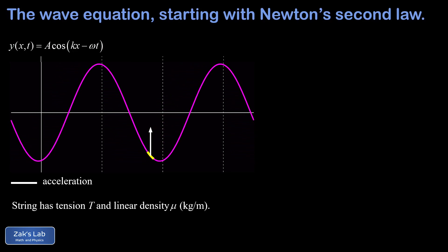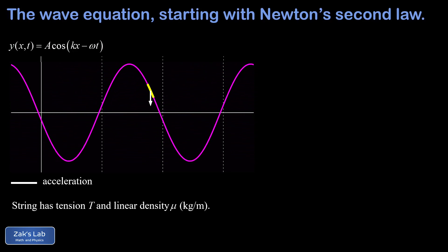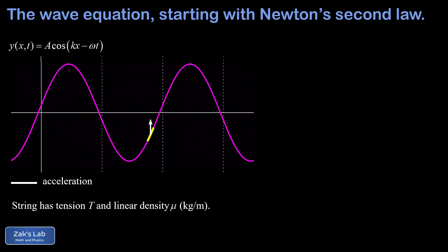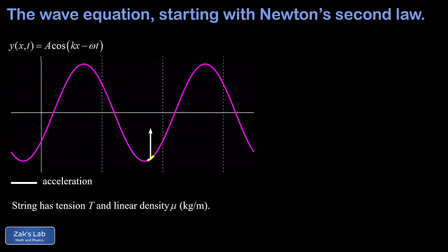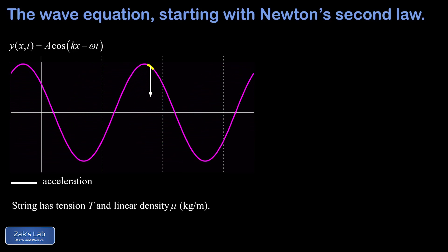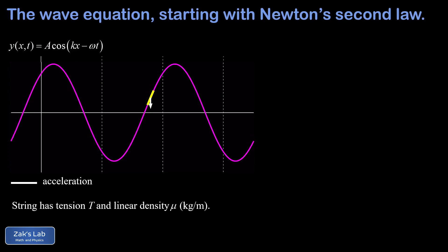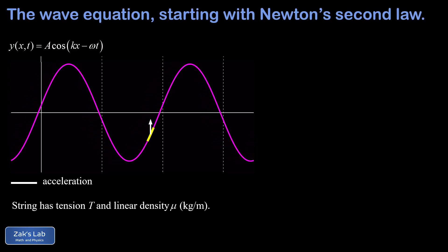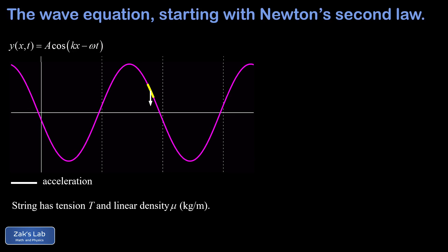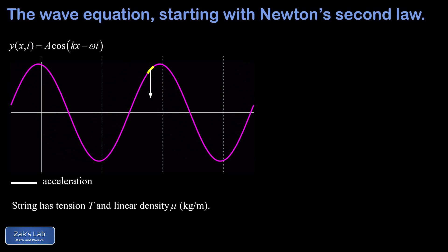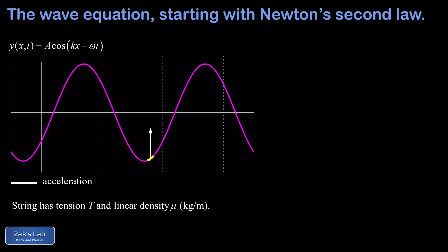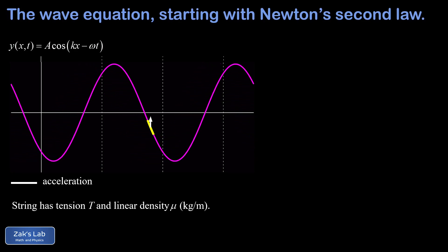We're going to arrive at the one-dimensional wave equation, and by comparing to our last encounter with the wave equation in the previous video, we'll arrive at an expression for wave velocity in terms of tension and linear density. In the animation, we're viewing the wave function — a cosine of kx minus ωt — and we see a highlighted little chunk of the string oscillating as a sinusoidal wave passes through.